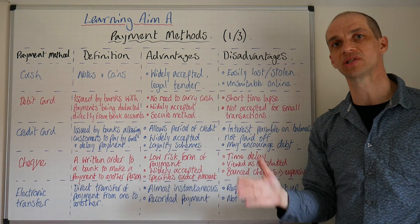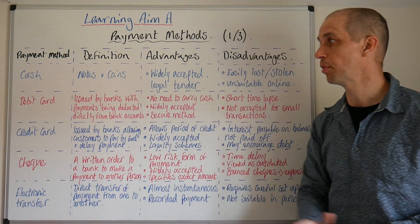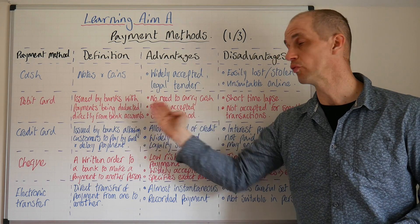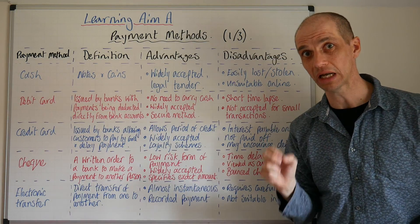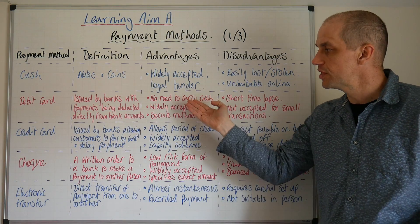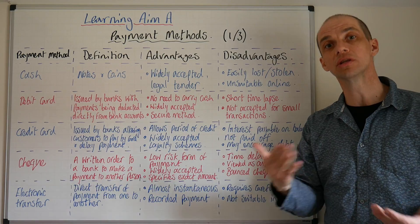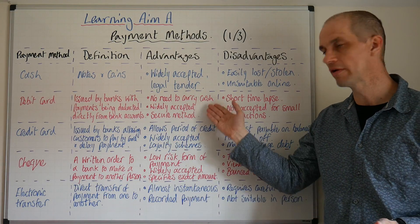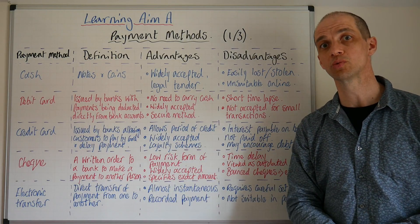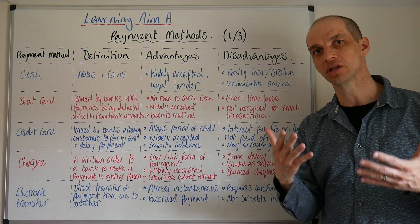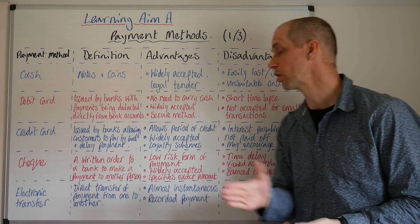Moving on, let's look at debit cards. More than likely you've actually got a debit card. These are issued by banks with payments being deducted directly from your bank account. There is no need to carry cash and it's really widely accepted — you see the Visa debit sign all over the place and all over the internet. It's also secure with the chip and pin element, and also contactless payment which we'll look at in the subsequent lesson.